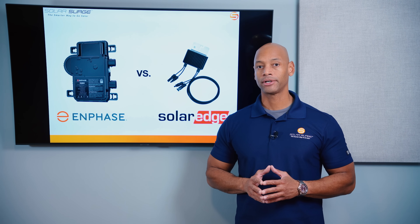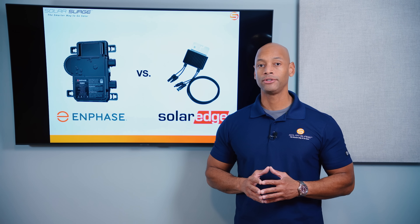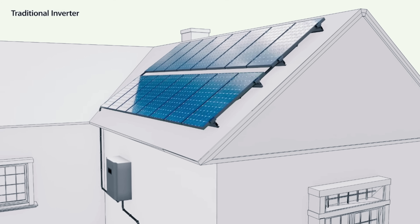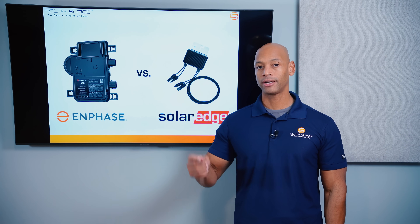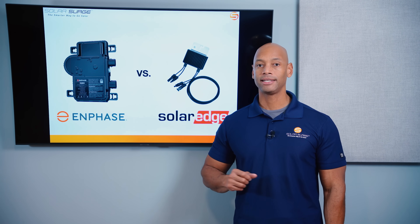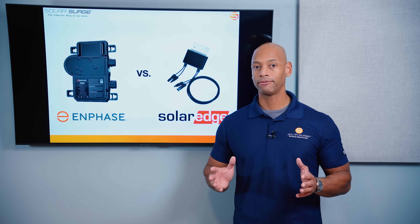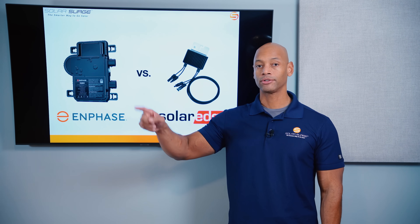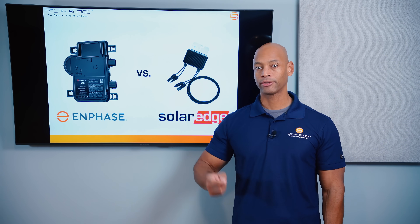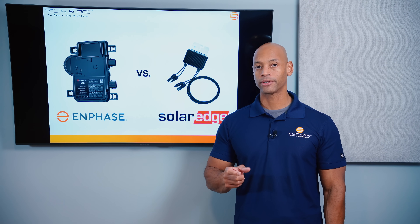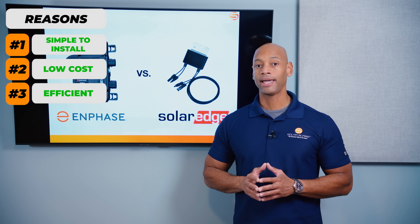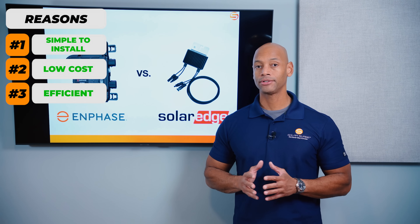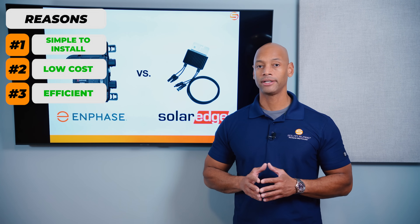Back in the day, prior to 2012 or so, pretty much all solar being installed on US homes used a central inverter or string inverter. The solar panels were wired together in series strings, typically 8 to 12 solar panels at a time, and that string was brought down to an inverter at ground level for DC to AC power conversion. This architecture worked great — simple wiring on the roof, a small conduit down to ground level, relatively low cost, and mostly efficient, as long as you didn't have any shading issues.